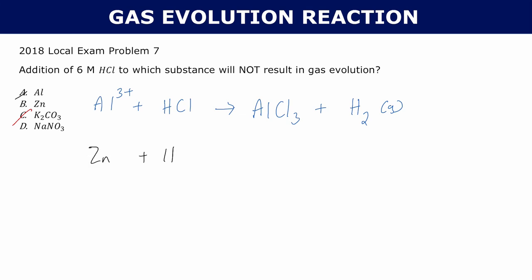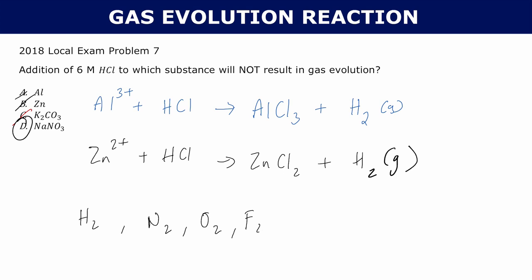Let's check B: zinc reacting with hydrochloric acid. Zinc has a charge of 2+, so it reacts with chloride to form ZnCl₂, and hydrogen is left on its own. Since hydrogen is a diatomic element, it becomes H₂ gas. So it can't be B either — the answer must be D. Along with hydrogen, the diatomic elements that are gases at room temperature and standard pressure include nitrogen, oxygen, fluorine, and chlorine. If any of these appeared on their own in a single displacement reaction, they would all be gases, causing a gas evolution reaction.